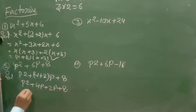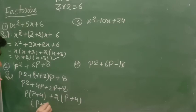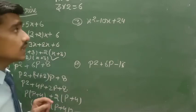Here common p: p(p + 4). And here 2 common: 2(p + 4). So (p + 2)(p + 4). This is your answer.